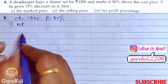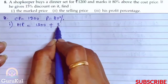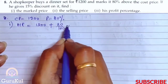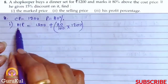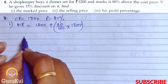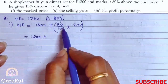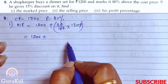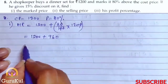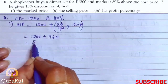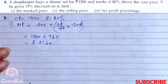Mark price will be cost price plus 80% of cost price. We add both to get our mark price. So that is 1200 plus 80% of 1200. After cancelling zeros, we get 12 into 96 and the remaining zero. So our mark price is rupees 2160.